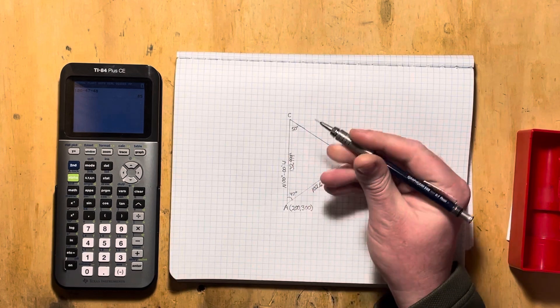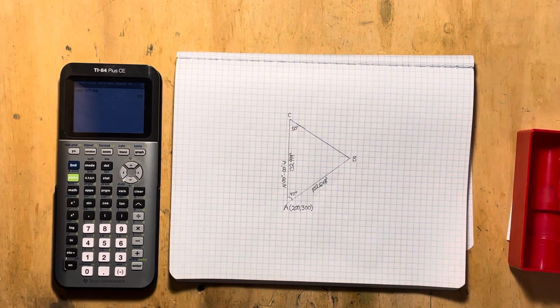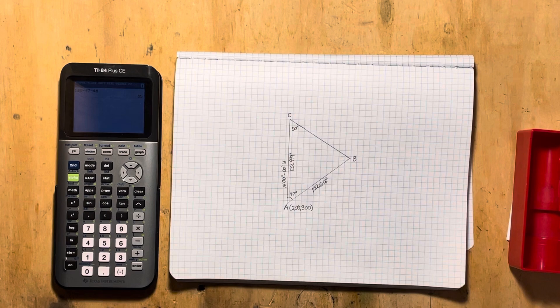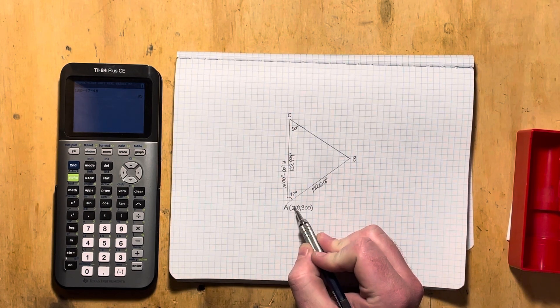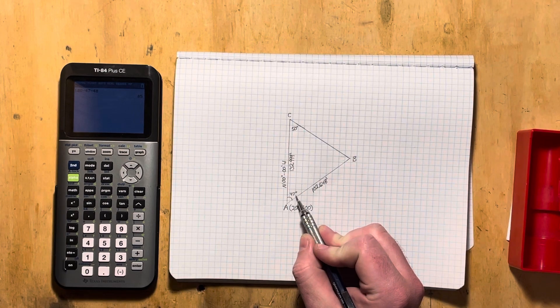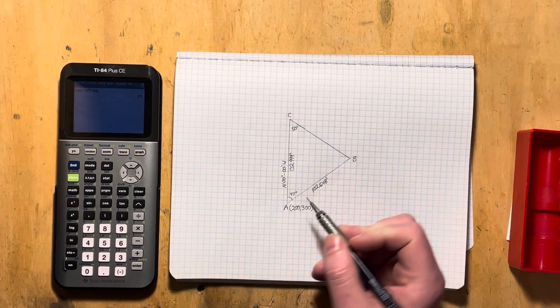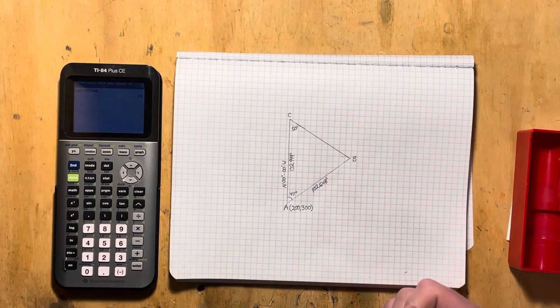We know its length is 132.999 feet. We know that the angle here at point A is 47 degrees. We know the angle at point C is 50 degrees.